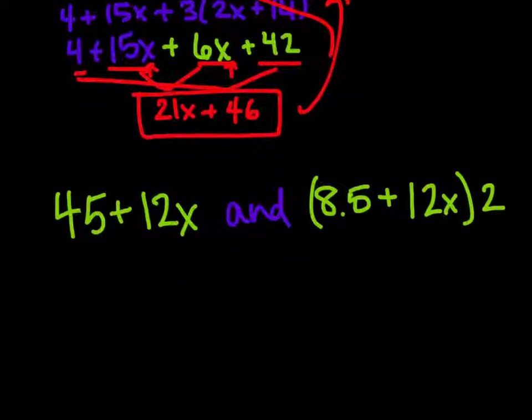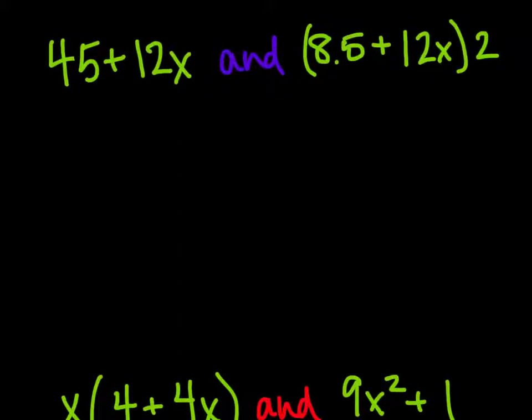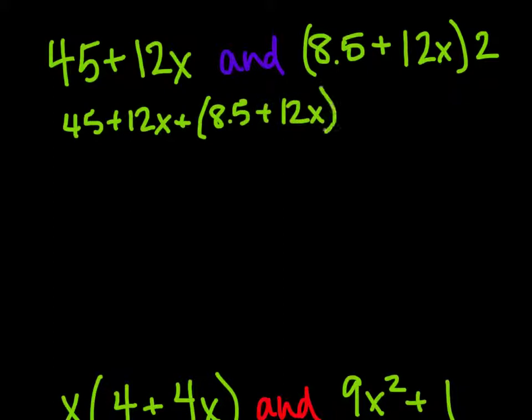Let's try another one. We have 45 + 12x and (8.5 + 12x) × 2. So let's add them together: 45 + 12x + (8.5 + 12x) × 2.